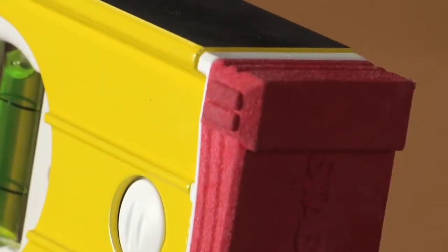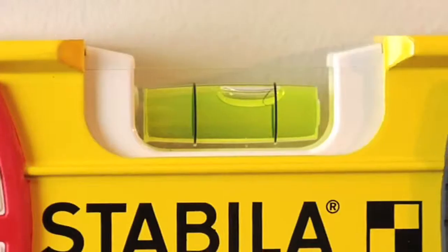Now using Stabila's patented wall grips, you're going to place the level flat against the wall. You're going to level out the center vial.